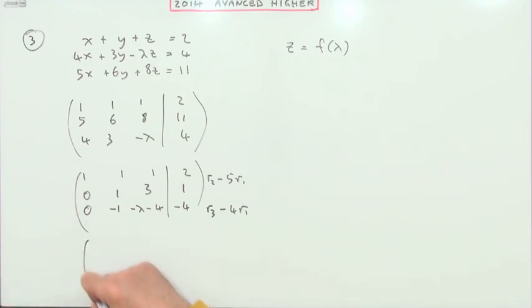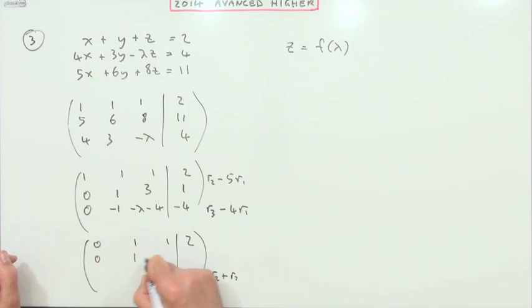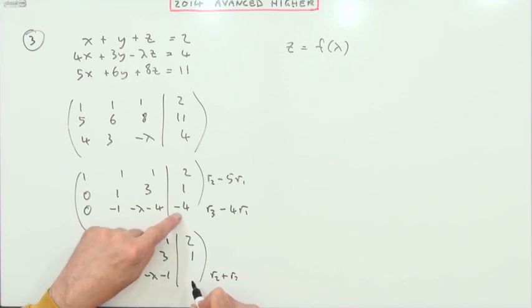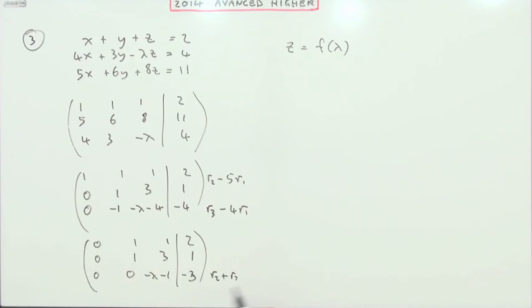Now I'll make that zero, and that's quite easy because all I need to do for that one is zero two plus row three. Zero, I just think you'll notice two zero one three one zero, then that'll be zero. So that'll be negative lambda minus one, and that'll come to negative three.